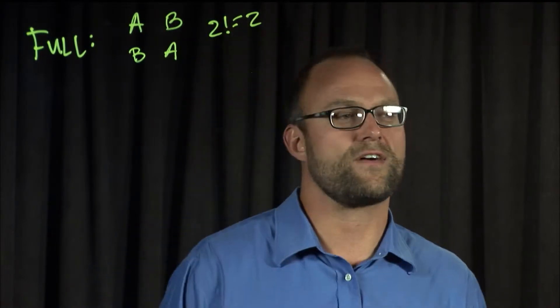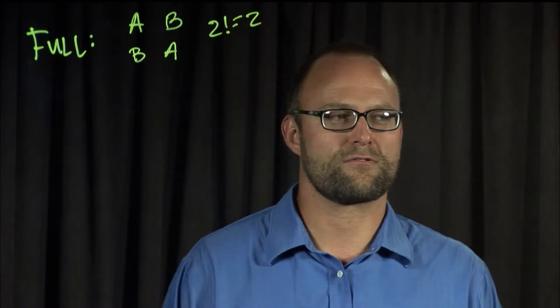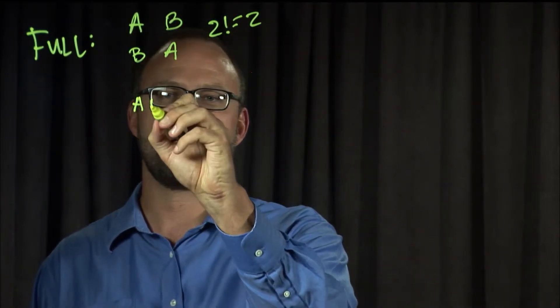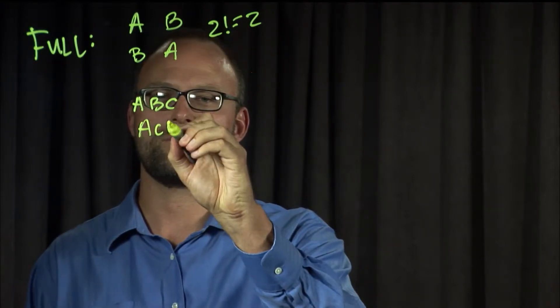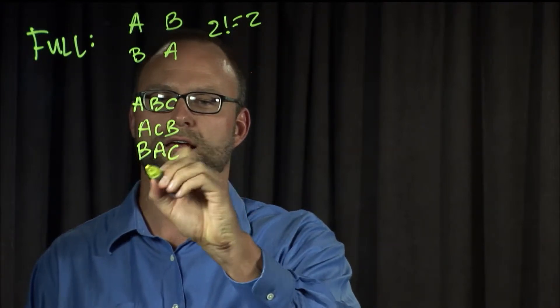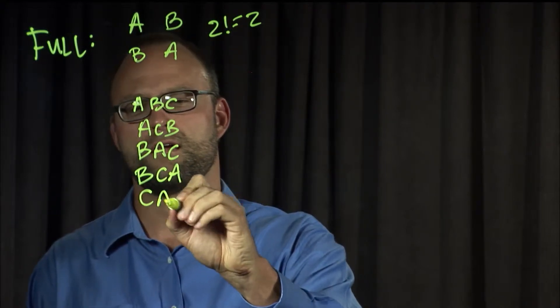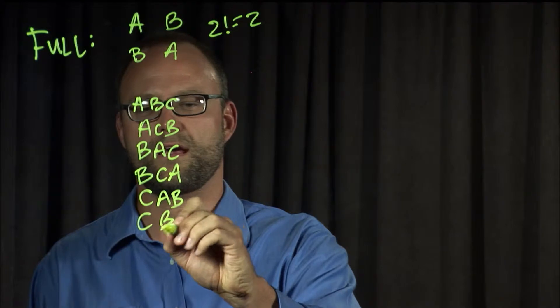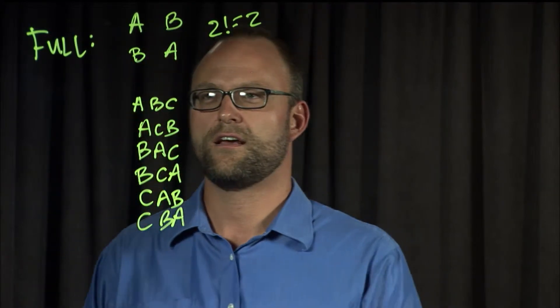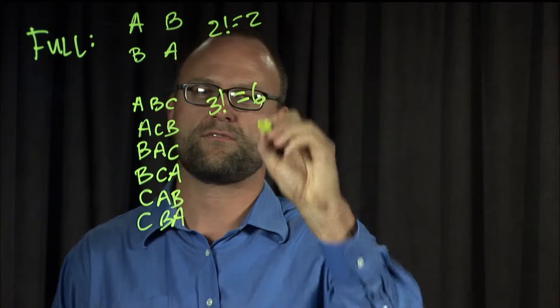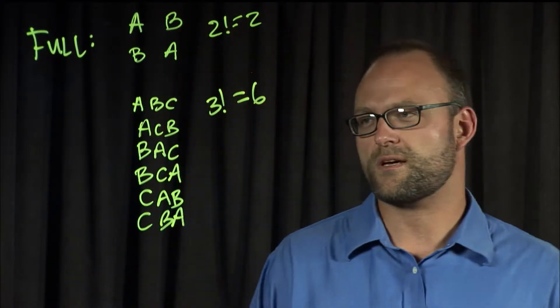With three conditions, we'd need A, B, C; A, C, B; B, A, C; B, C, A; C, A, B; and C, B, A. That went big fast. We now have six. With three, we have six sequences that need to be expressed.